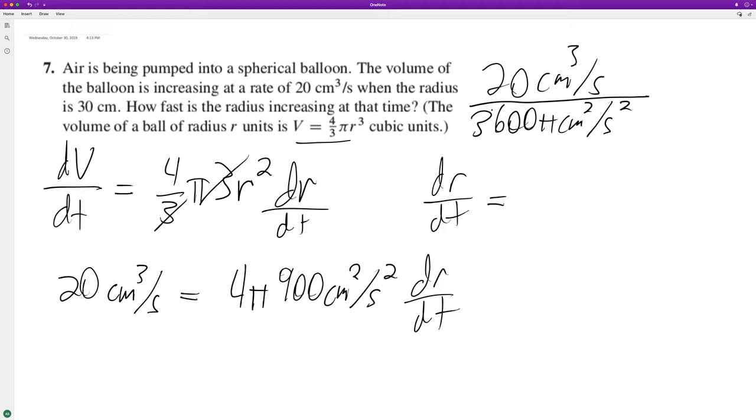We're not going to use an approximation, we'll just use exact results. We end up with dr/dt = 1/(180π) centimeters per second. That's what this whole thing simplifies down to. I hope this problem helped you out. I appreciate you taking time to watch, and have yourself a great day.